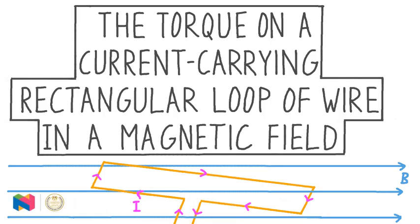In this video, we're talking about the torque on a current-carrying rectangular loop of wire in a magnetic field. We're going to learn why a torque acts on such a current-carrying wire, how to calculate its magnitude, and also how to determine something called the magnetic dipole moment for such a current-carrying loop.